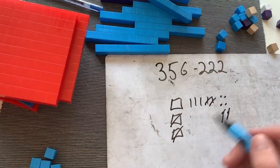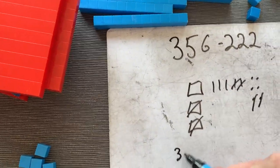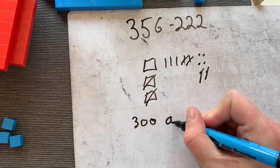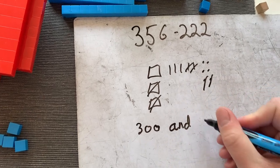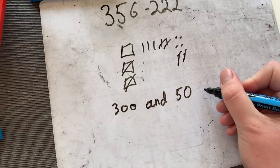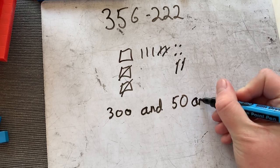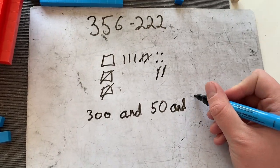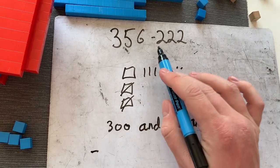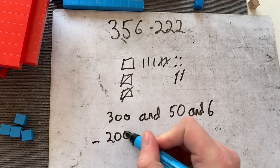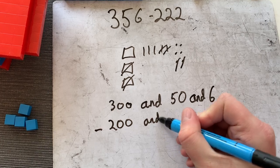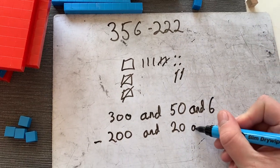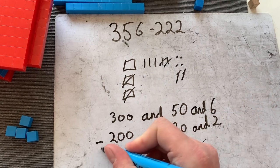So then writing that out: 300. We don't write plus because we don't want to confuse ourselves, we write and. 50 and 6 minus 200 and 20 and 2.